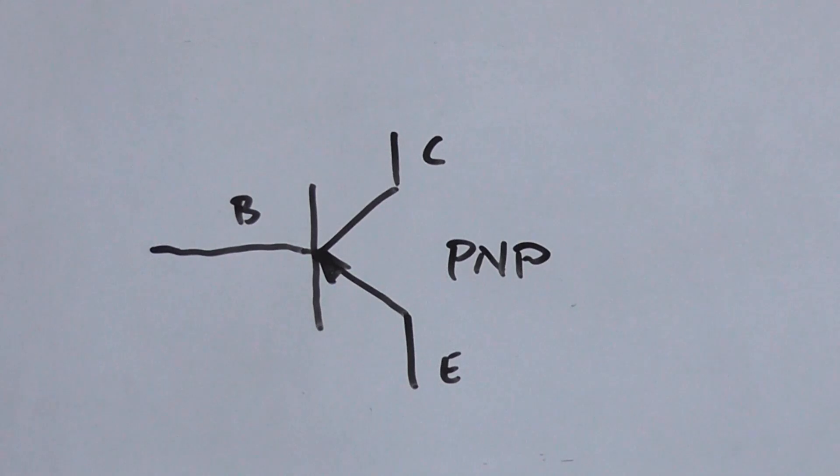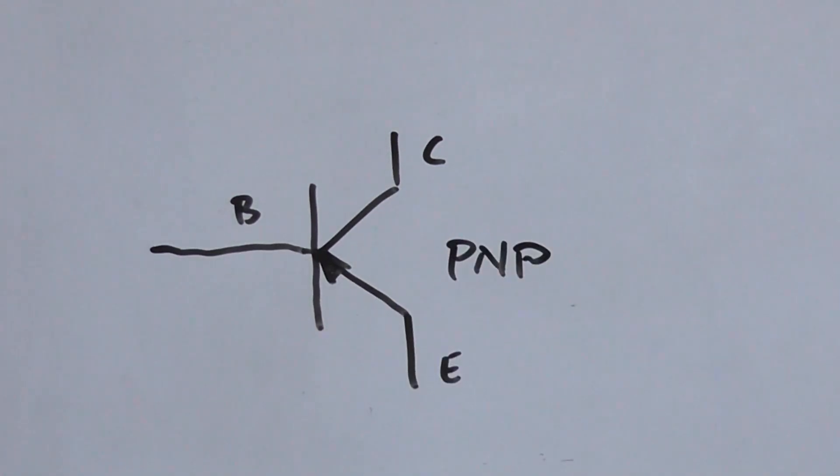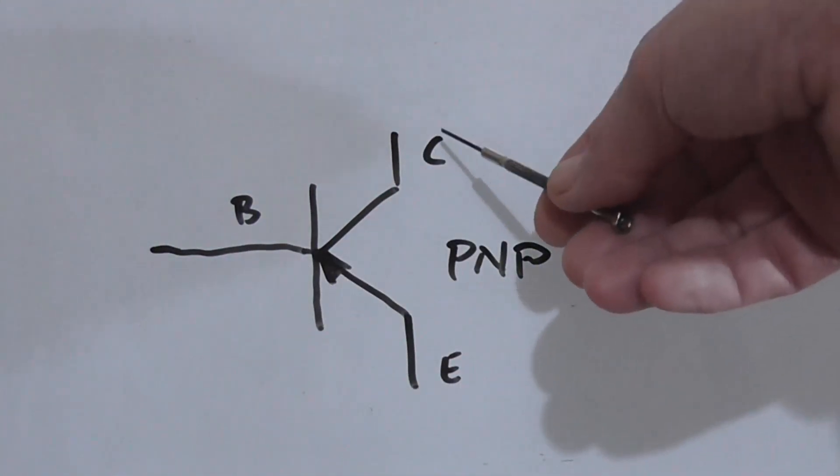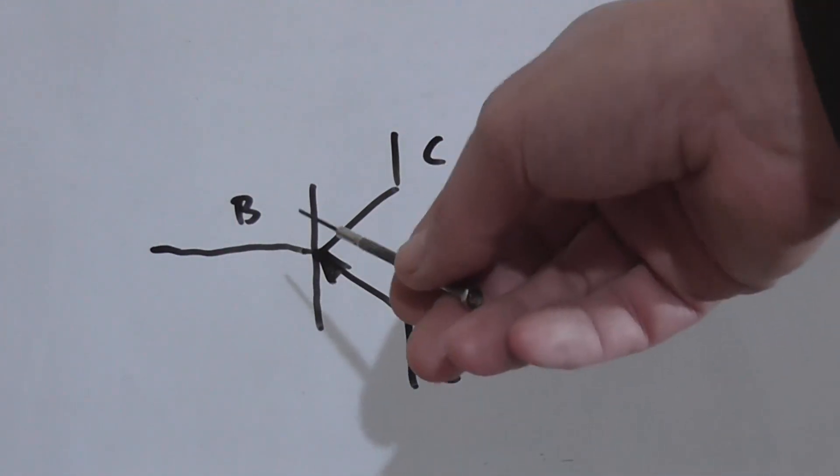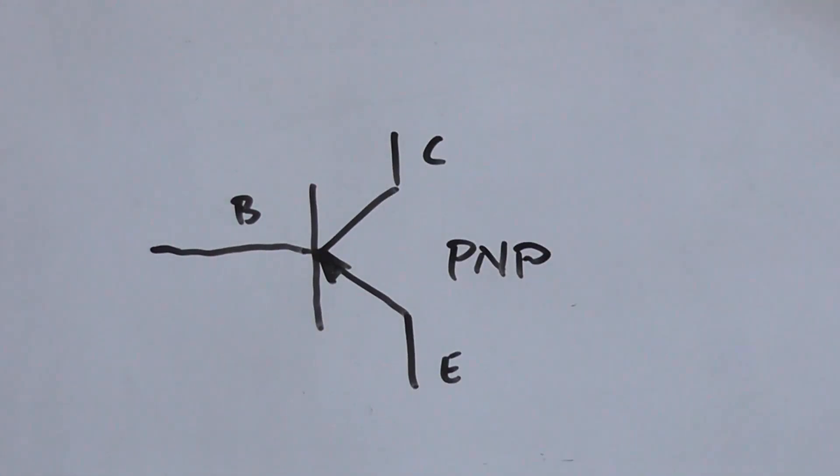The NPN counterpart is similar except the polarity is reversed. We have a positive collector, a positive emitter, and a negative base. So to test the transistor the negative probe goes on the base positive on the collector. Conversely to test the base emitter junction negative on the base positive on the emitter.